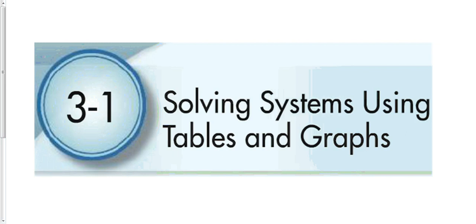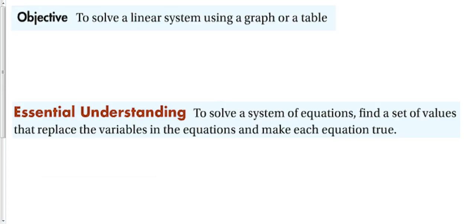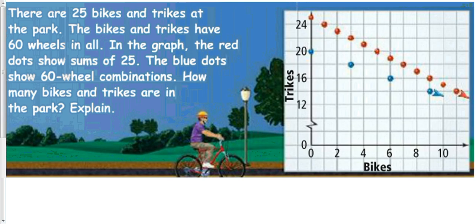Section 3-1: Solving Systems Using Tables and Graphs. Our objective is to solve a linear system using a graph or a table. By the end, we should know that to solve a system of equations, we find a set of values that replace the variables in the equations to make the equations true. This is probably the most inefficient way to solve a system of equations.